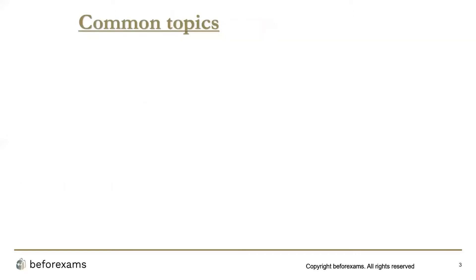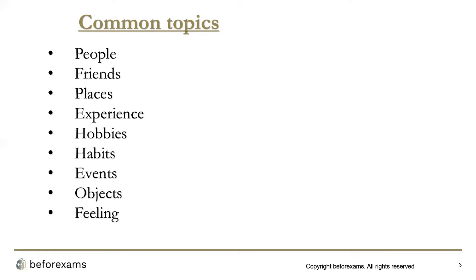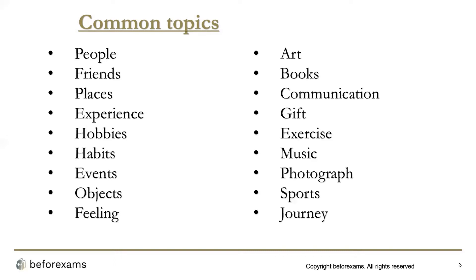Now, the common topics asked in IELTS Speaking Part Two — you should not think the question will only be from these topics, as there are hundreds of topics they can draw from. But some general topics include: people, friends, places, any experience, hobbies, habits, and events — they'll ask you to describe an event you attended.